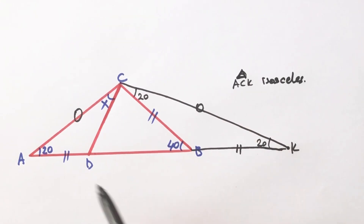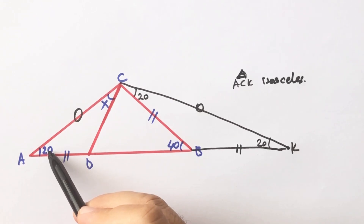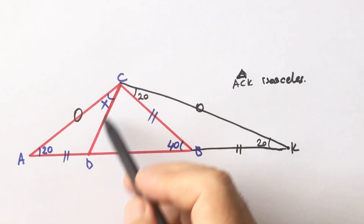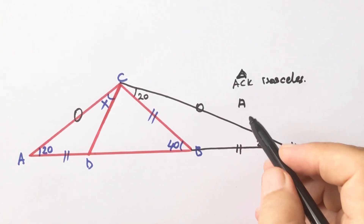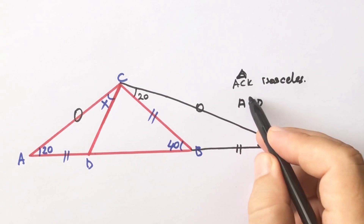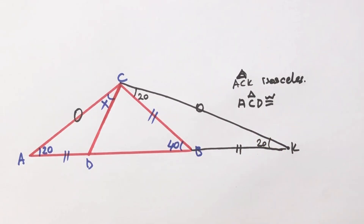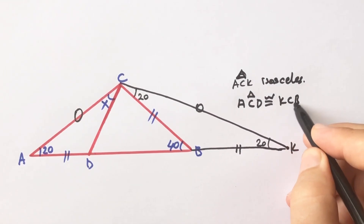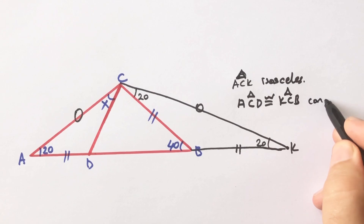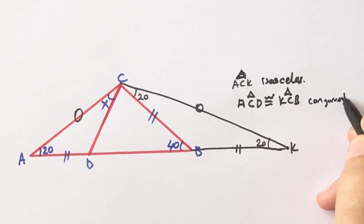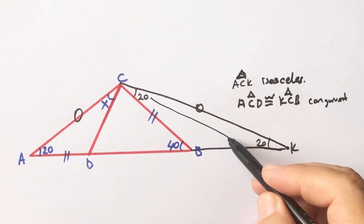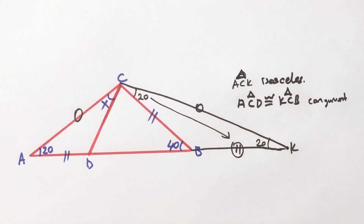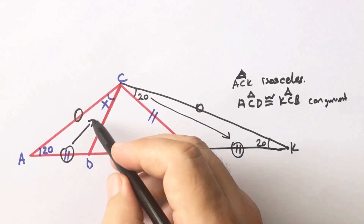This triangle and this triangle are congruent because they have the same two angles between these two equal lengths. So triangle ACD and triangle KCB are congruent. Therefore, if there is a 20 degrees angle opposite this length, the angle opposite this length must also be 20 degrees.